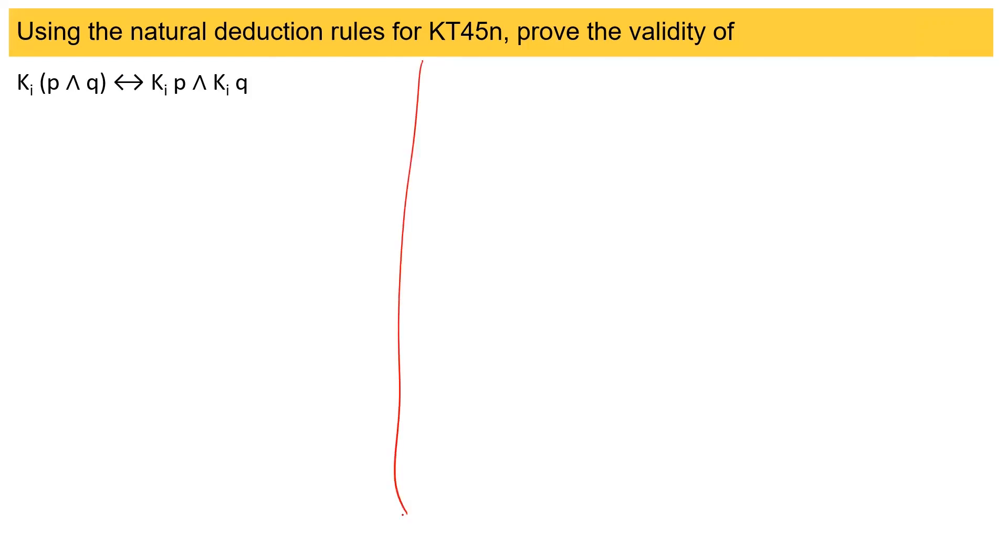First, let me consider that KI P and KI Q is valid, so this is my premise. Then I assume a KI and I can say KI P from KI T KI P of three. Similarly, I can say KI Q from elimination rule two and of conjunction and from one, and then I can say Q from KI T of five.